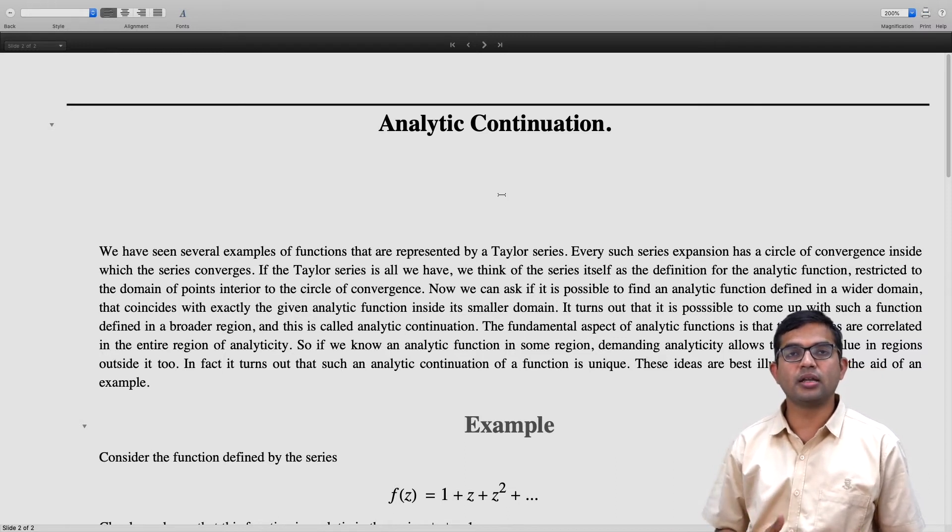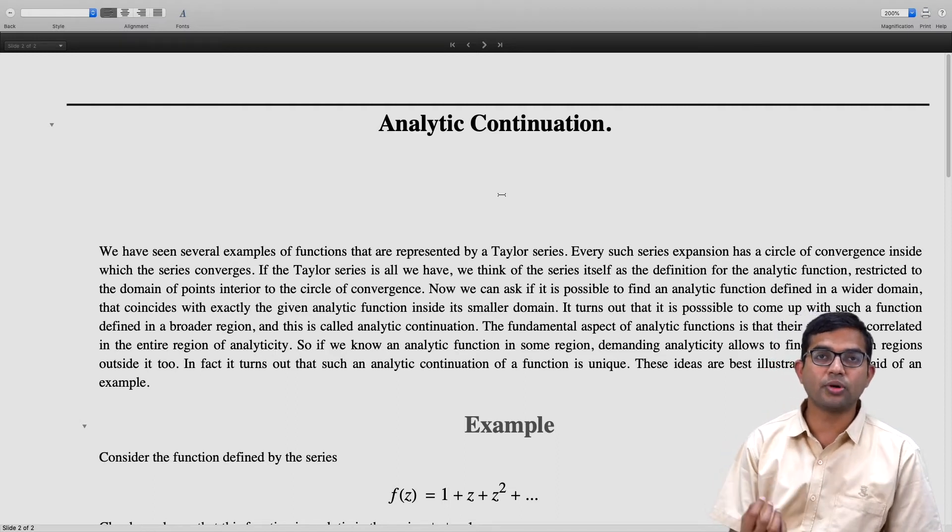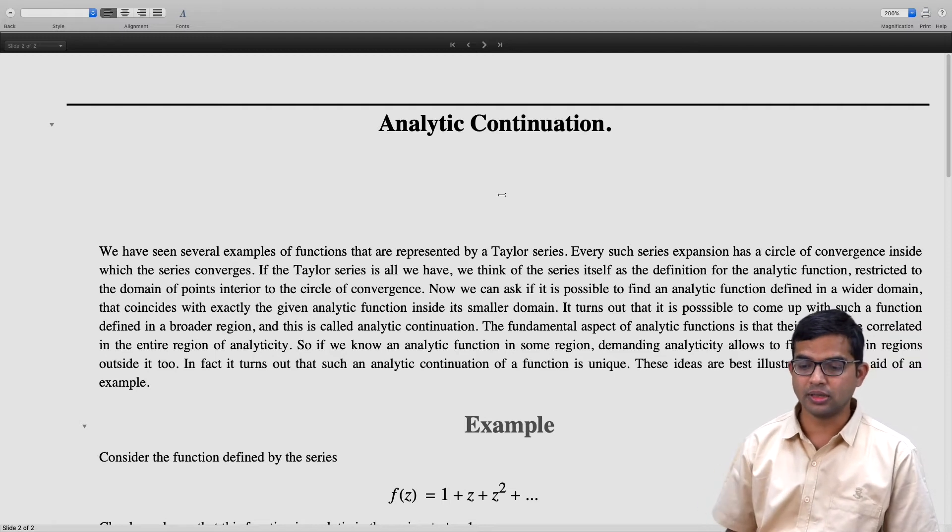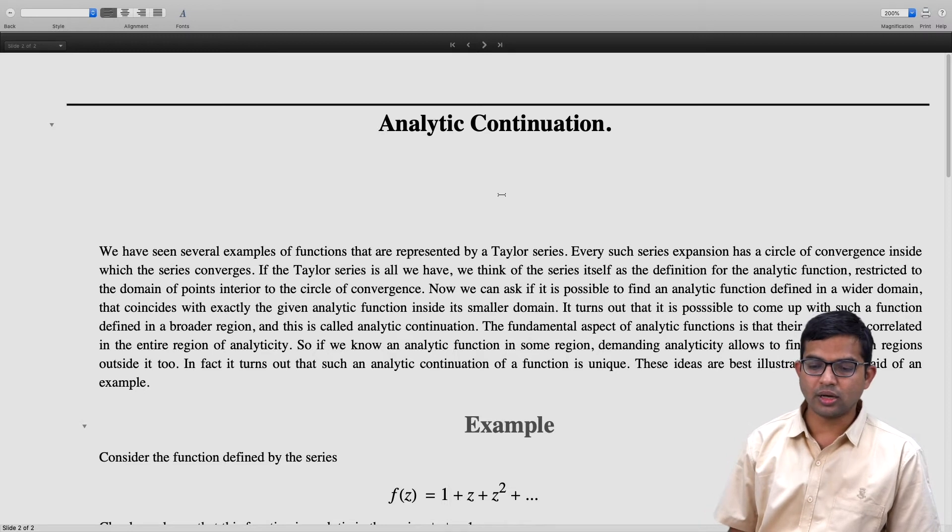We have seen, for example, that analytic functions have derivatives to all orders. We have seen how the Cauchy integral formula also suggests this kind of underlying correlation between the value of a function at a point and far away from it as well. In this lecture, we will look at what is called analytic continuation.